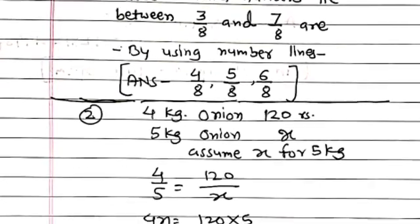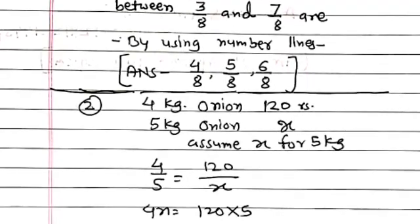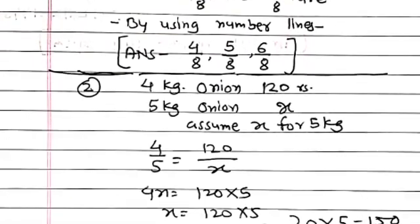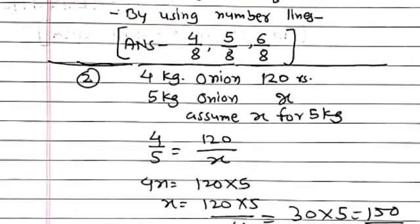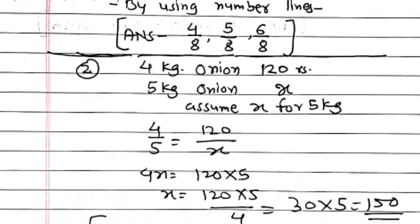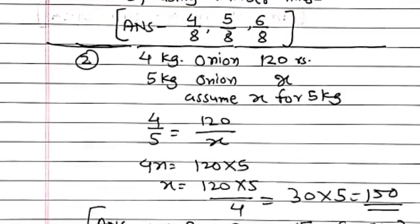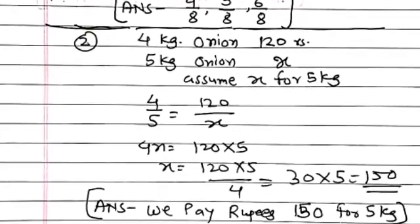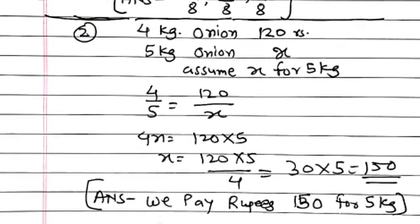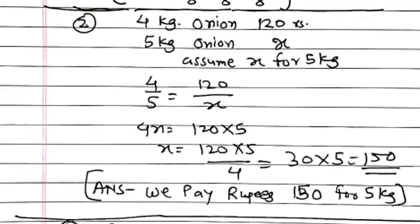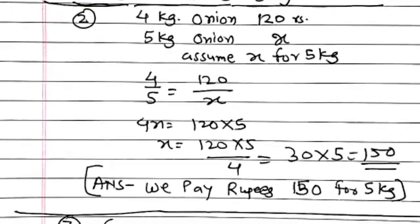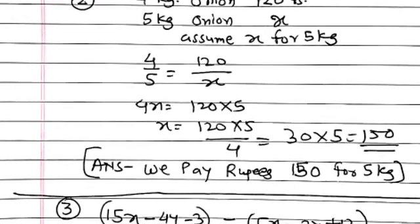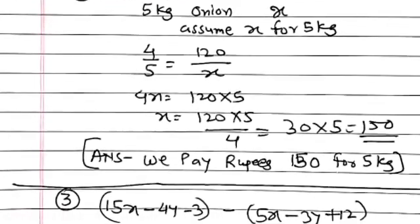Second question: 4 kilograms of onion cost 120 rupees; find the value of 5 kilograms of onion. Assume x is the value of 5 kilograms of onion. The equation is 4 upon 5 equals 120 upon x, so 4x equals 120 into 5, and the answer is 30 into 5 equals 150. We pay rupees 150 for 5 kilograms of onion.